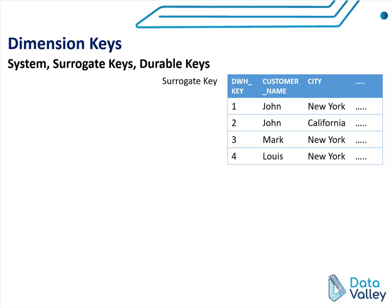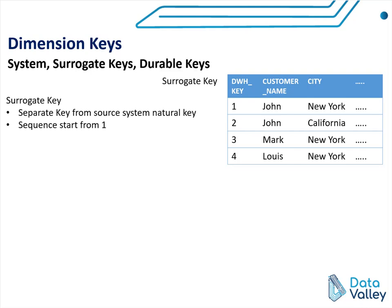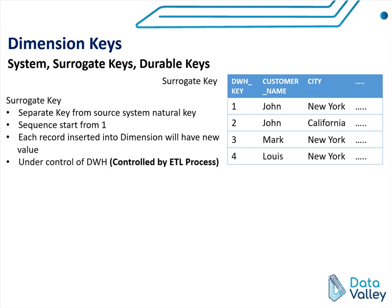Now let's review some properties of surrogate keys. A surrogate key is totally separate from the source system natural key. Normally, it will be a database integer sequence starting from one. Each record inserted into a dimension table will have a new surrogate key value. It is totally under the control of the data warehouse and is generated by the ETL process.